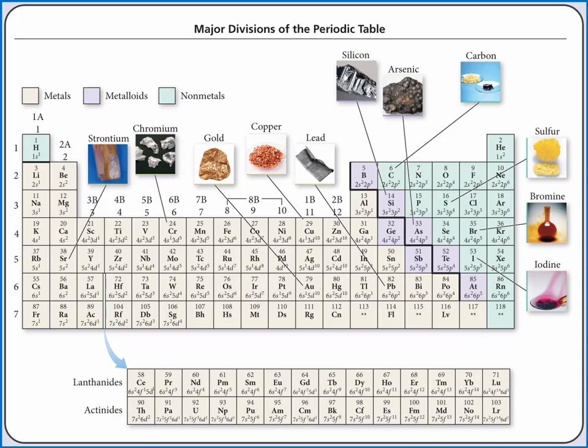The elements in the periodic table can also be categorized as metals, nonmetals, and metalloids. Metals are in the lower left of the periodic table. Nonmetals are in the top right, and metalloids separate them.